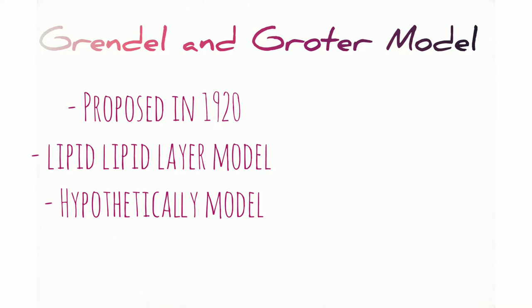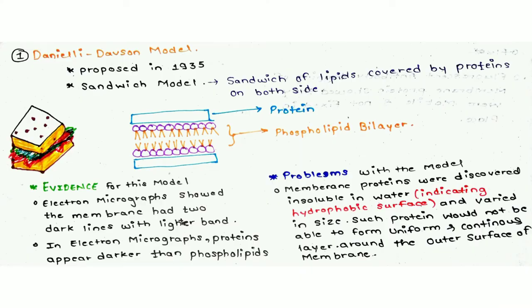Let's start with the first model: Grendel and Gotter's model, proposed back in 1920. It is the lipid bilayer model. They hypothesized that if the plasma membrane is a bilayer membrane, then the monolayer of lipid would be doubled — meaning two monolayers of lipid would form the plasma membrane or the cell membrane.